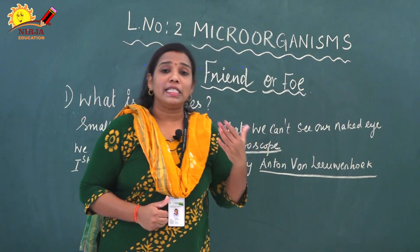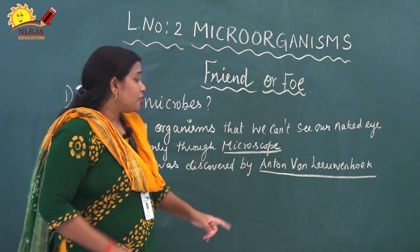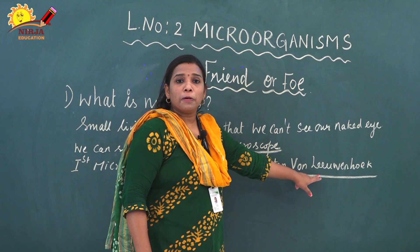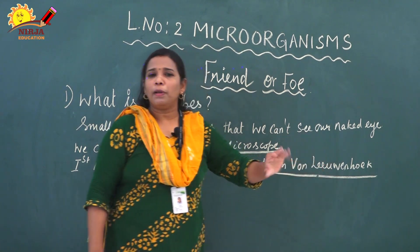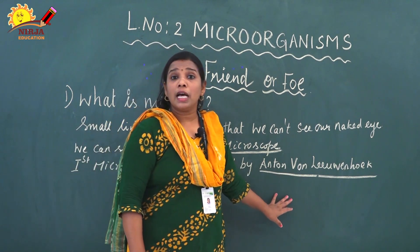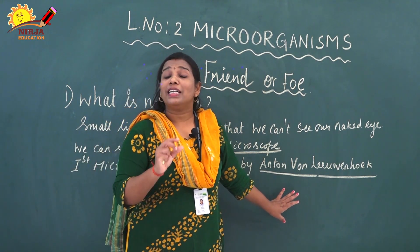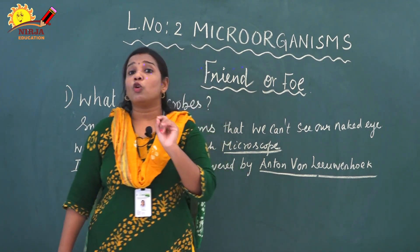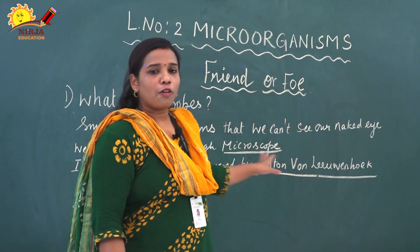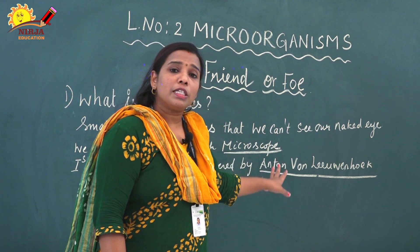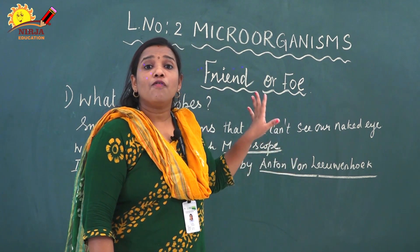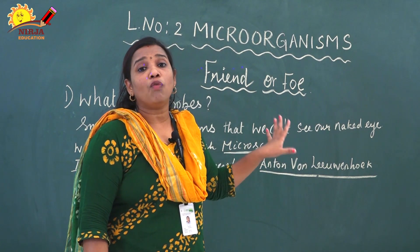The microscope was discovered by Anton van Leeuwenhoek. He is the first person to discover the simple microscope, and at the same time, he was also the first person to identify and discover microbes in rainwater.